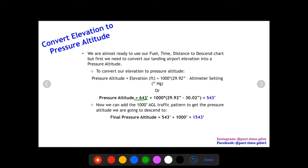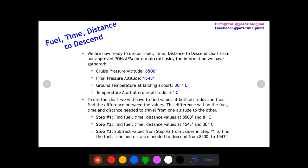So here we go. We have our elevation of 643. We have 29.92 minus 30.02. So we get negative 0.1. We times that by a thousand to get negative 100. And then we do 643 plus a negative 100, and we get 543. So now we can add the thousand feet AGL traffic pattern altitude to get the pressure altitude that we are going to descend to, because we're not going to descend all the way to the surface. We're going to descend into a traffic pattern altitude. So we do 543 plus a thousand feet. And now this is our final altitude, pressure altitude, that we're going to use in our fuel time distance to descend charts.